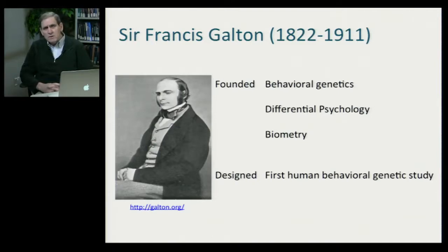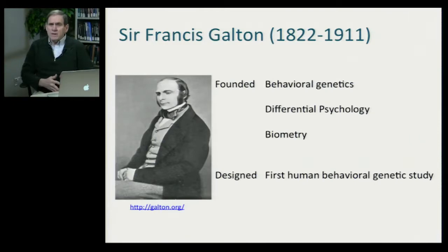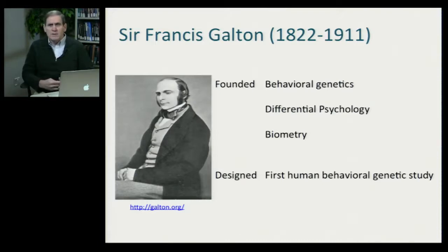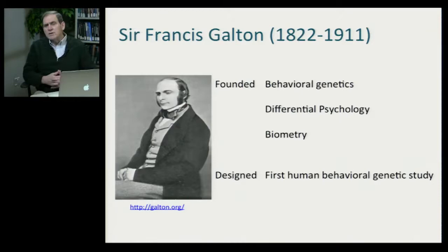Galton founded the field of behavioral genetics, individual differences or differential psychology. He developed a whole area of statistics called biometry or biometrics. He did this by doing the first behavioral genetics study. When Darwin published his magnum opus in 1859, The Origin of the Species, Galton took this as defining his life work — applying Darwinian principles to the developing field of psychology, which was differentiating out of philosophy in the late 19th century.